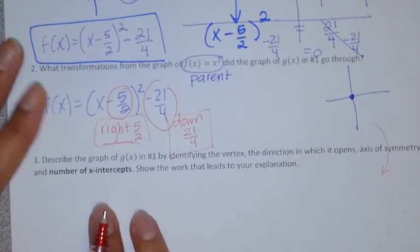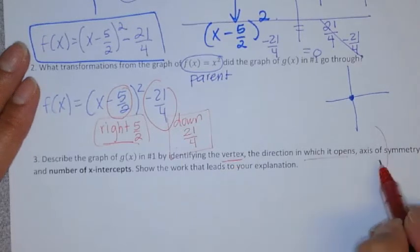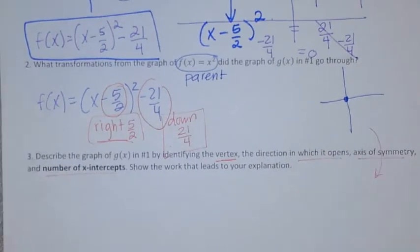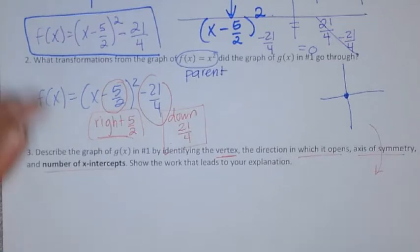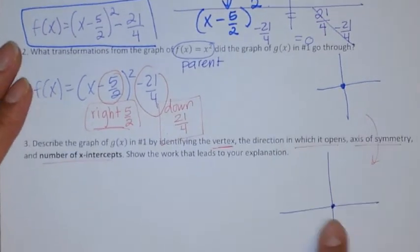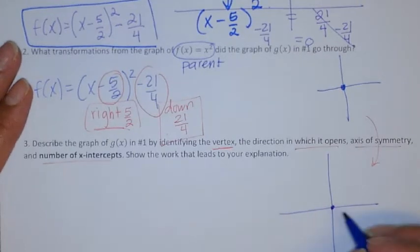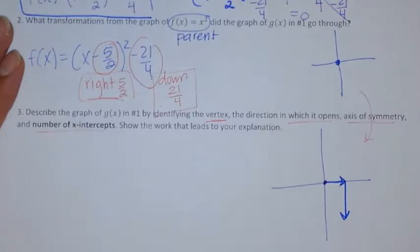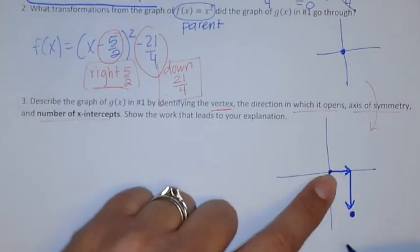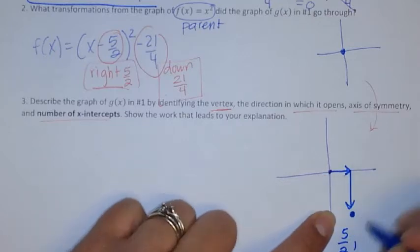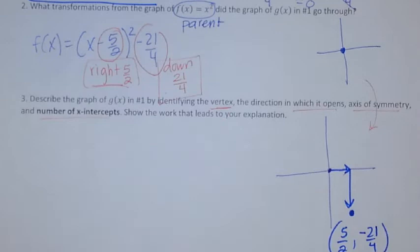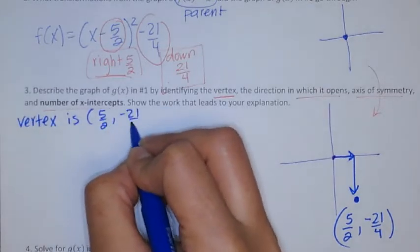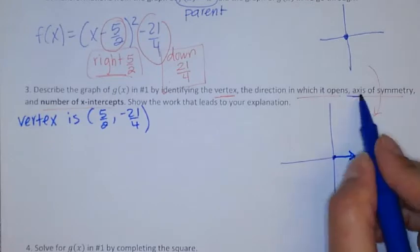For number three, we're going to describe a bunch of things. The vertex, direction in which the parabola opens, axis of symmetry, number of x-intercepts. I'm going to write my sketch. From the parent 0, 0, we know that I moved right 5 halves. It doesn't have to be exact. We'll just know that I moved right some, 5 halves. And then it moved down 21 over 4. So my vertex is here, and it's going to be 5 halves x and down 21 fourths, negative 21 over 4.